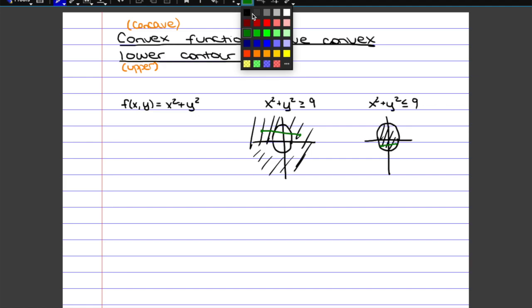So here we have an upper contour set that is not convex, and here we have a lower contour set which is convex.